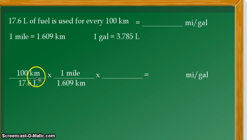As you can see, the unit kilometer is in the numerator in the given, so it should be in the denominator in our conversion factor for it to cancel out as shown there.